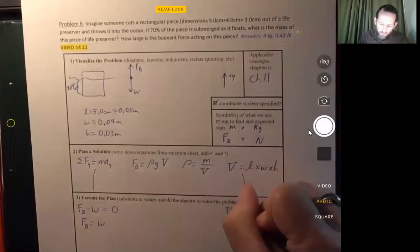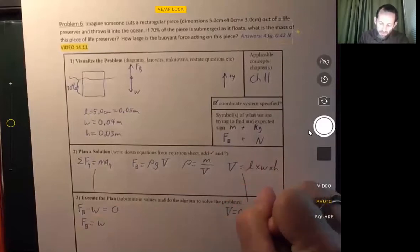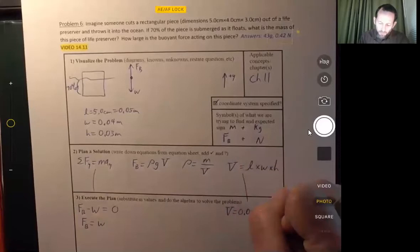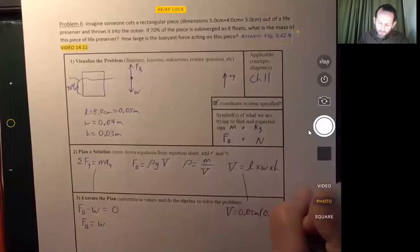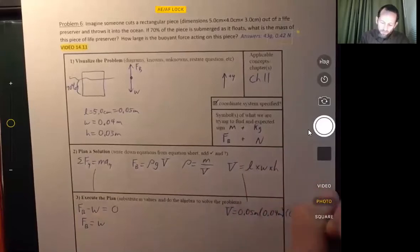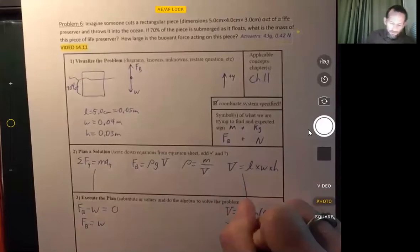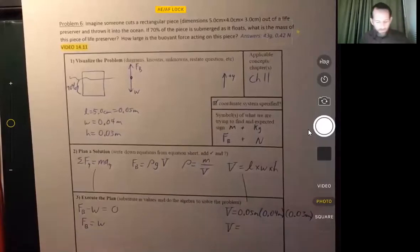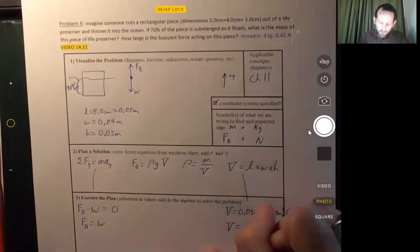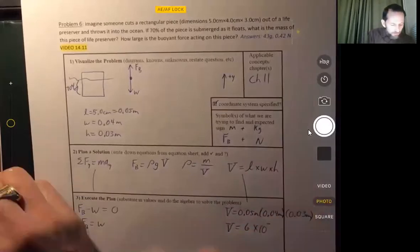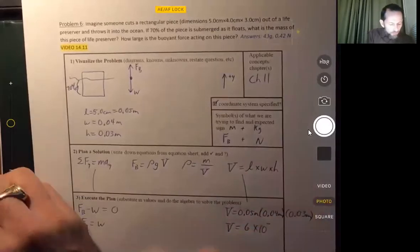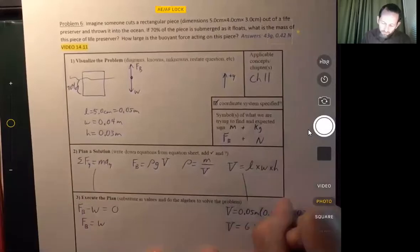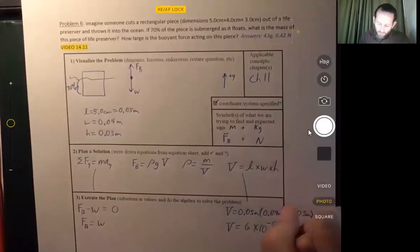That's just 0.05 meters times 0.04 meters times 0.03 meters. So the volume, we can get that right away. 0.05 times 0.04 times 0.03. And we get 6 times 10 to the negative 5 cubic meters.